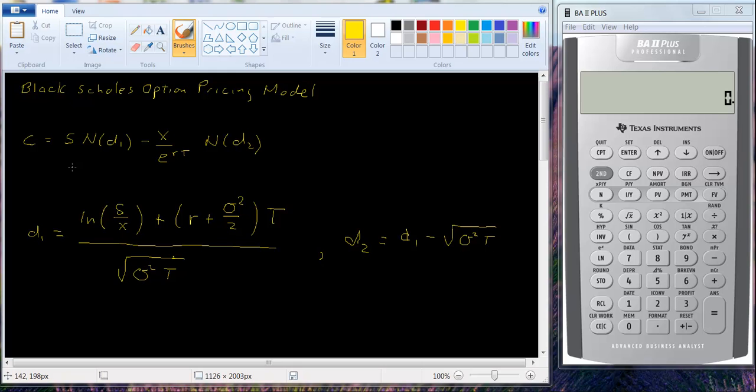Now what does the formula essentially say? Here it's S times ND1, and I'll explain ND1 in a minute, minus essentially the present value of the exercise price. E to the minus RT is continuous time present value factor. If I wrote X divided by 1 plus R raised to the T power you'd probably be more familiar with that from financial management class, times ND2. If you sort of ignore ND1 and ND2, what you have here is the call option is equal to the stock price, the current stock price, minus the present value of the exercise price, which makes a lot of sense.